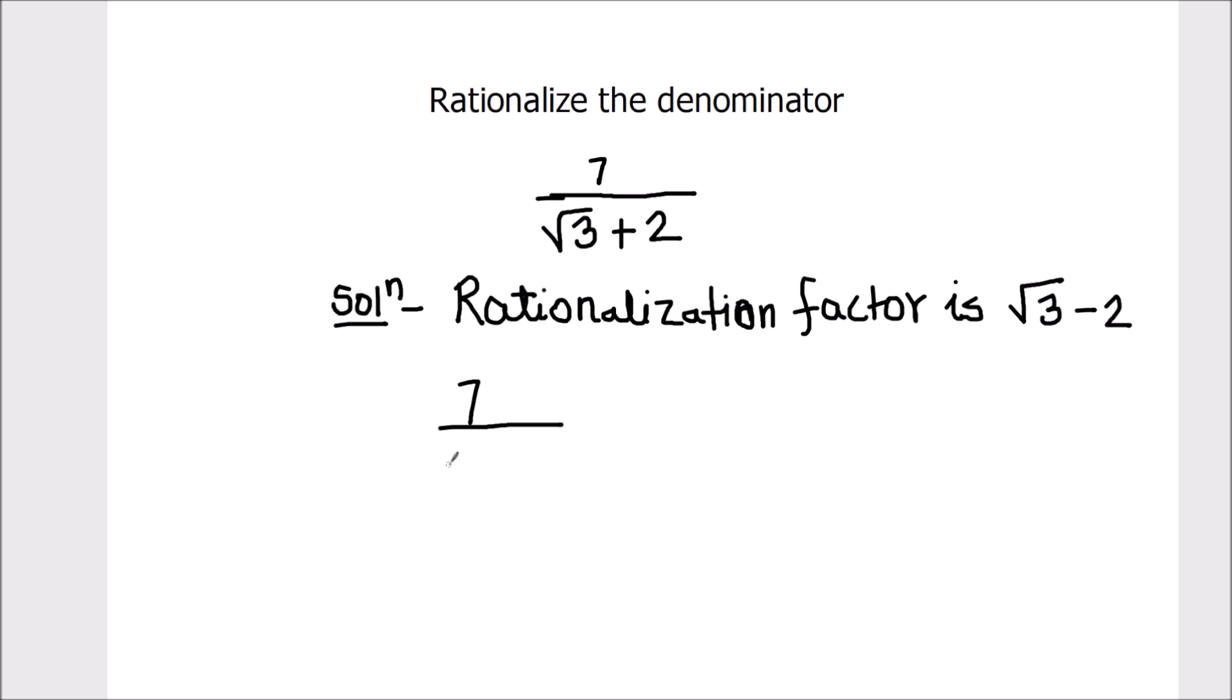That's going to be 7 upon root 3 plus 2. To rationalize the expression, we multiply and divide the expression with the rationalization factor. So, that's going to be root 3 minus 2 divided by root 3 minus 2.